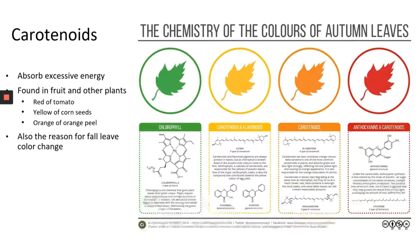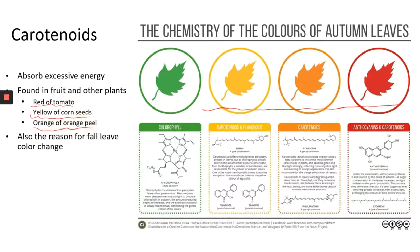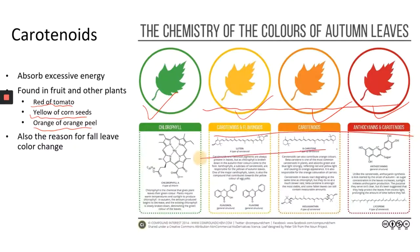Chlorophyll reflects green light back, so that's why leaves appear green. We also have carotenoids — another group of pigments found in plants. Carotenoids have a range of colors: yellow, orange, or red. They are found in certain fruits and plants — the red color in tomatoes, yellow from corn seeds, orange from orange peel. All those colors come from different carotenoids. Usually leaves have both chlorophyll and carotenoids, but chlorophyll is the most abundant pigment, so the leaves appear green because chlorophyll masks the other pigments.